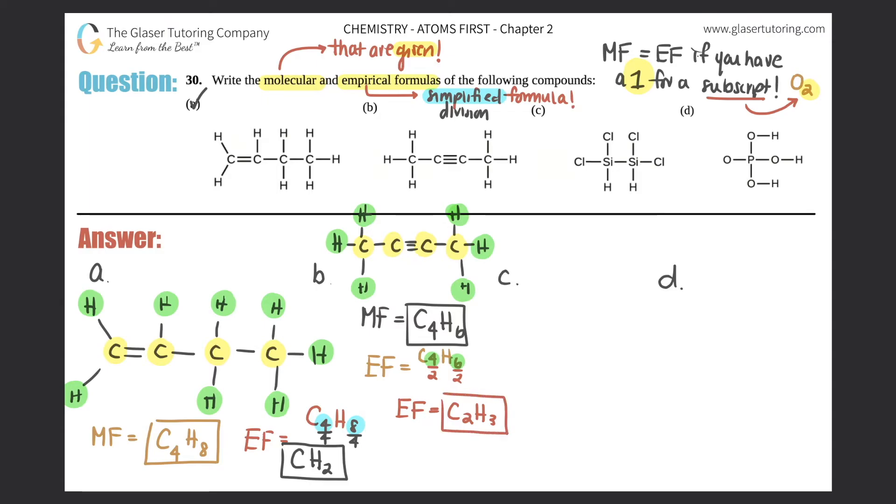So there you go, that's your empirical formula for this one. Box that off, those are your two answers for b. Let us see, we got Si, Si, and then chlorines all around. Cl, oh sorry no, this is an H. We got Cl up top here, chlorine up top here, chlorine over here, and then H down here.